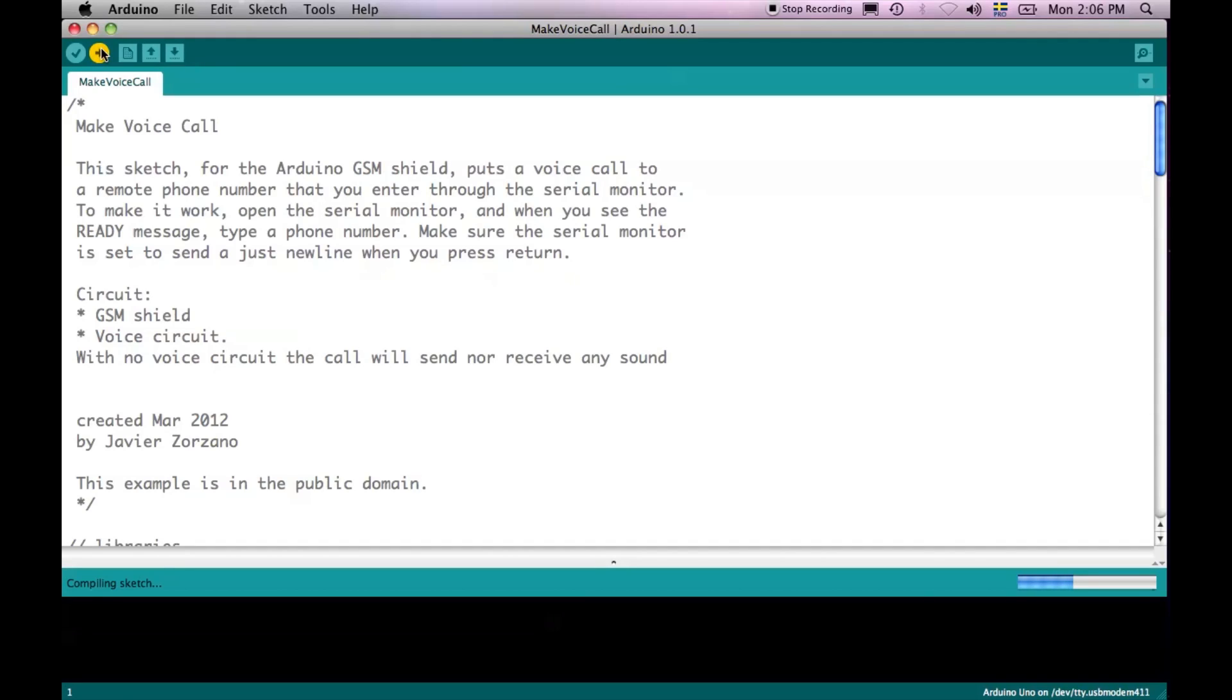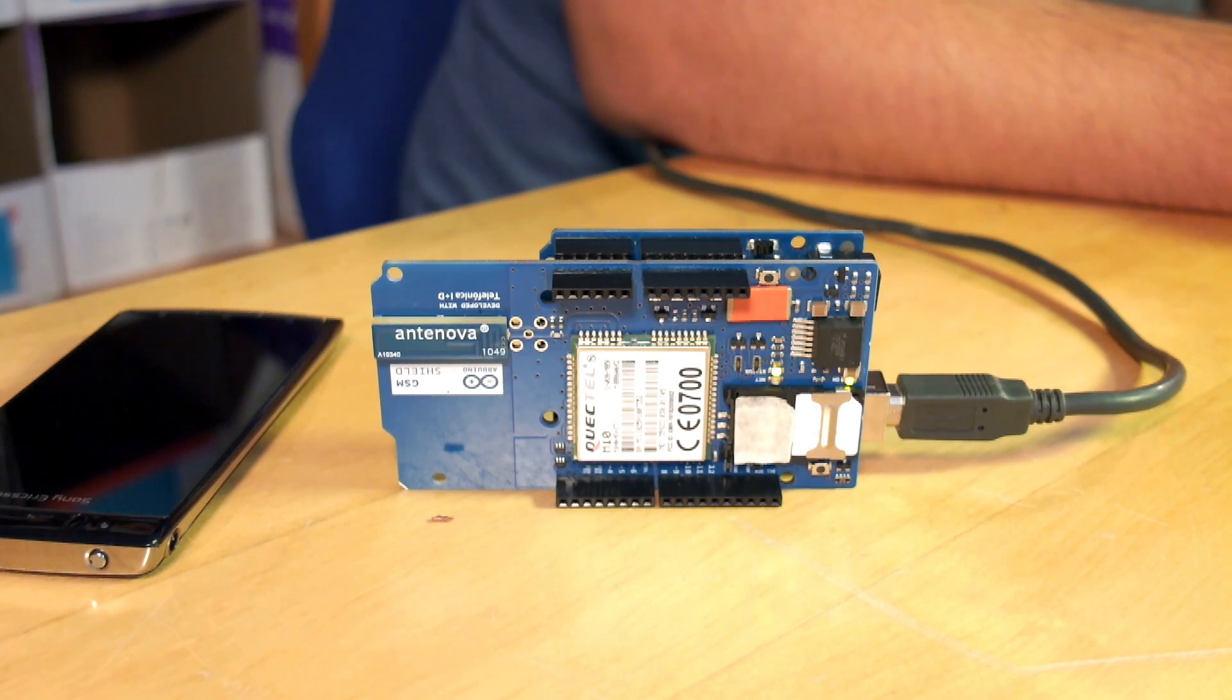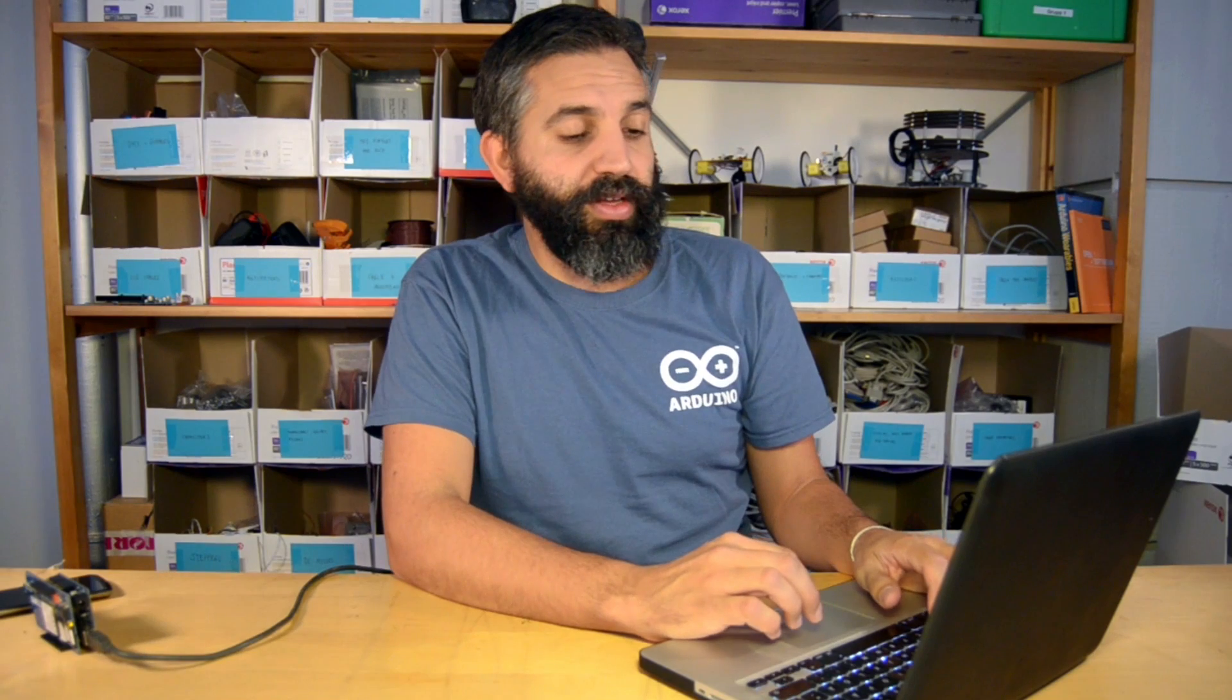Like almost all the examples for this library, everything you need to do is to interact with the board through the serial port monitor that will be asking you for the phone numbers, or text messages, or whatever you need to send over the GSM network.